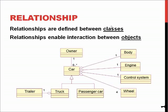The UML diagrams use similar types of notation on all object relationships. However, the one diagram which utilizes these different sorts of relationships to the largest degree is the class diagram.